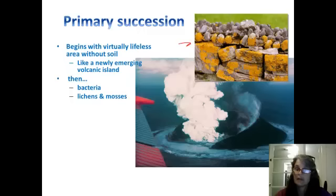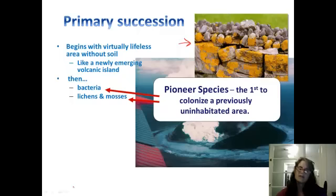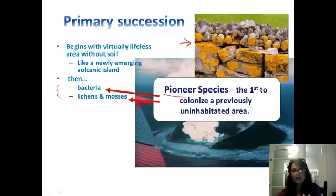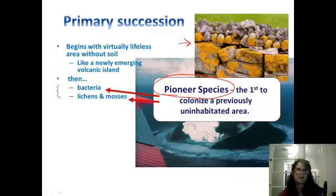This is showing some lichen growing on some rock. The term for these kinds of organisms — bacteria, lichen, mosses — is pioneer species. These are the organisms that are hardy enough and require little enough that they can colonize a place that has completely never had life on it before. Pioneer species are very important to get primary succession started.